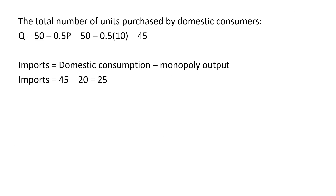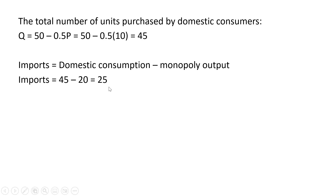The total number of units purchased by domestic consumers: we take the world price and plug it back into our demand equation, and we get 45 — so consumers in this domestic market will buy 45 units. To calculate the number of imports, we take domestic consumption of 45 units and subtract the monopoly output of 20, and we get 25 imports.